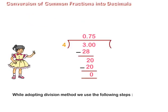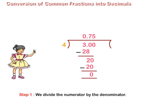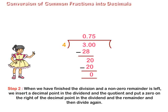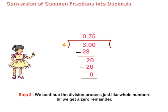While adopting division method, we use the following steps. Step 1: We divide the numerator by the denominator. Step 2: When we have finished the division and a non-zero remainder is left, we insert a decimal point in the dividend and the quotient and put a 0 on the right of the decimal point in the dividend and the remainder, and then divide again. Step 3: We continue the division process just like whole numbers till we get a 0 remainder.